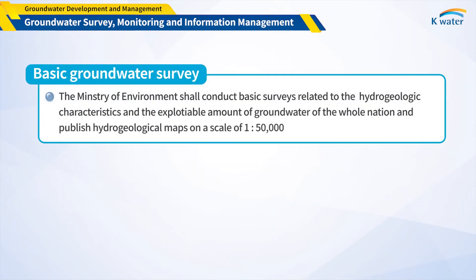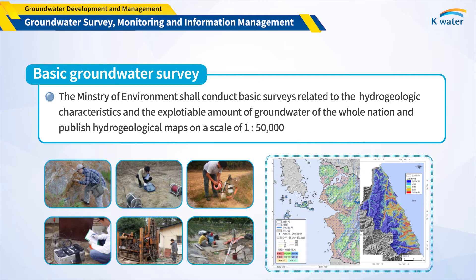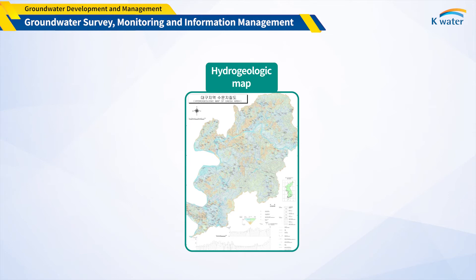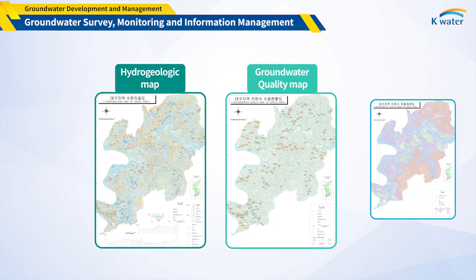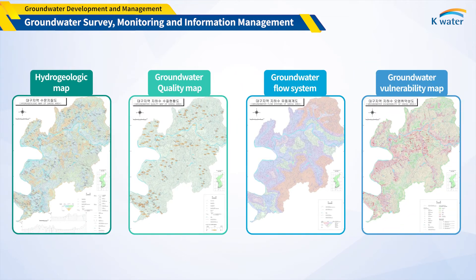Next, we'll look at the Basic Groundwater Survey. This project is carried out to identify the conditions and characteristics of groundwater across the country. It is a two-year project for 129 regions nationwide, publishing groundwater maps by conducting on-site surveys such as geological study, geophysical study, water level study, water quality study, and pumping test. The major groundwater maps include the hydrogeologic map with aquifer distribution, groundwater level and aquifer characteristics, groundwater quality map, groundwater flow system, groundwater vulnerability map, linear lineament map, and depth to groundwater map.